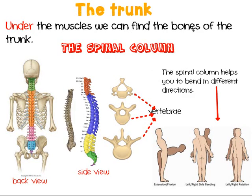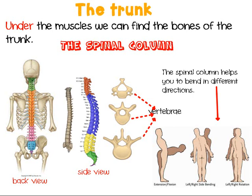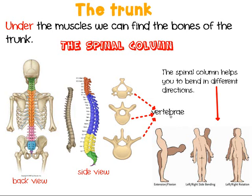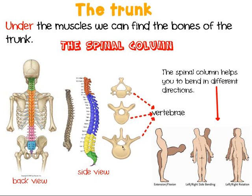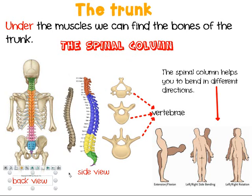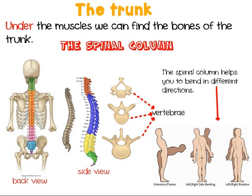Under the muscles we can find the bones of the trunk. The spinal column — this is very important. You can see the colors: the green, the yellow, the pink, the blue, the purple — all these are part of the spinal column. The bones connected — these bones are called vertebrae — and they have different shapes, smaller and bigger. They form all together, connected, the spinal column. This is the back view, the side view, and the view of the whole spinal column from all angles.